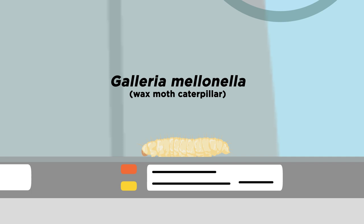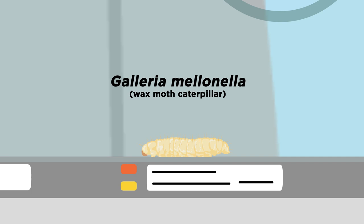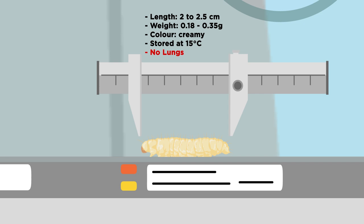Galleria Melanella, a specifically adapted wax moth caterpillar, is used to test infection models for superbugs. Despite the fact they don't have lungs, the results obtained are directly comparable to those using mice, making them the ideal alternative.